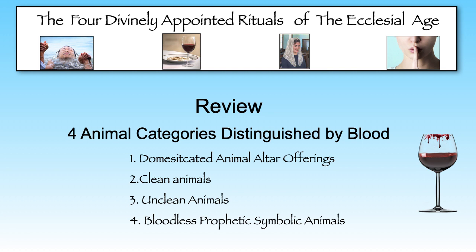Fourth are the prophetically symbolic animals projecting the immortalized Christ and the saints. These are the four bloodless cherubim and the four living creatures, as we're told specifically that blood cannot be part of the immortal spirit nature.